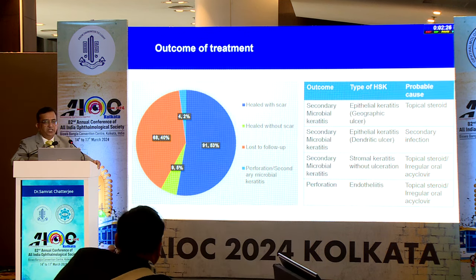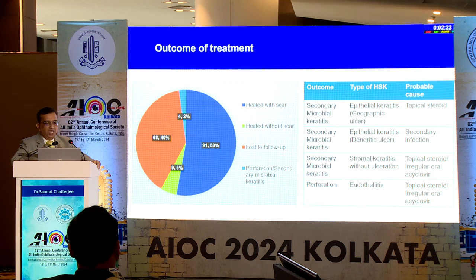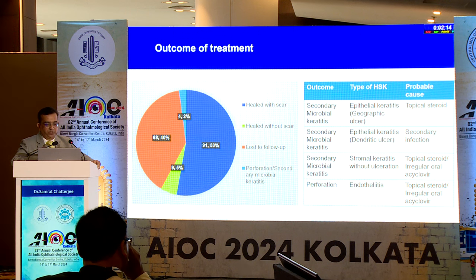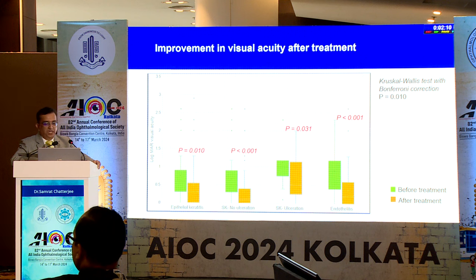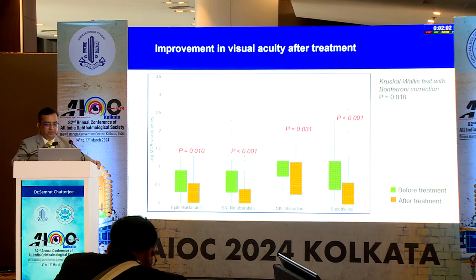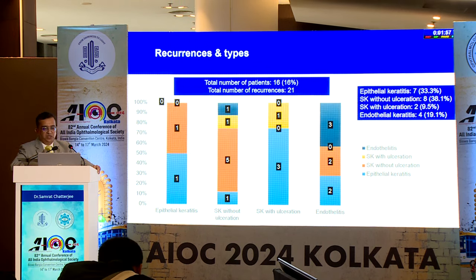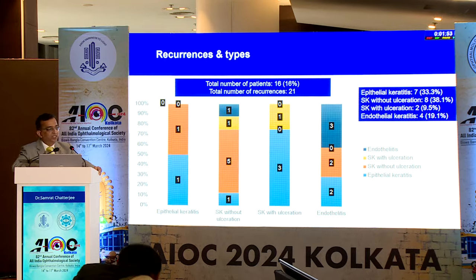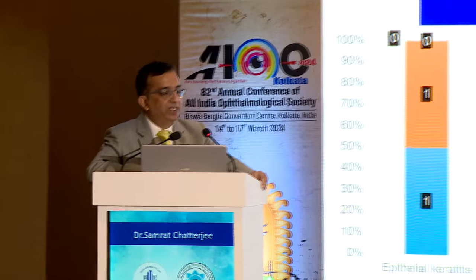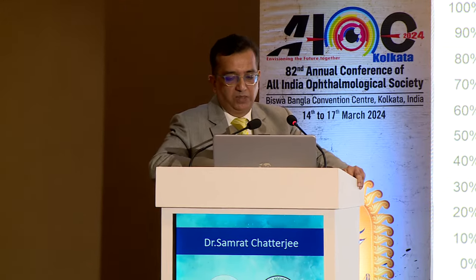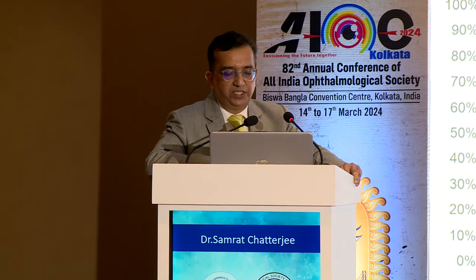More than two-thirds of patients healed; 40% were lost to follow-up. In 3 cases, secondary bacterial and fungal keratitis occurred, and in one patient there was perforation. Maximum improvement in visual acuity was seen in stromal keratitis without ulceration, while the worst outcome was with stromal keratitis with ulceration. There were 21 episodes of recurrence in 16 patients; most common recurrence pattern was stromal keratitis without ulceration.